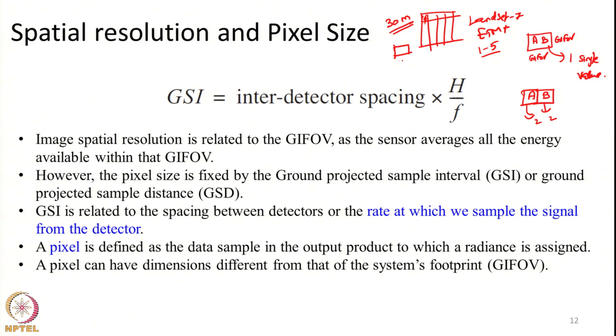But what determines this pixel size? Does GIFOV determine the pixel size? The answer is no — GIFOV does not determine the pixel size. The pixel size is determined by our scanning sampling time in the case of a line scanner or whisk broom scanner, or in the case of a pushbroom scanner, by the distance between two adjacent detector elements.